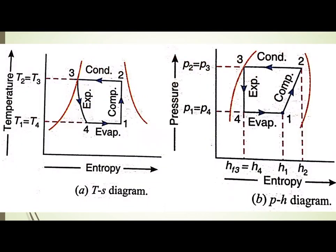Here is the PH diagram and TS diagram. You can see that the exit of the compressor is wet vapor — it means point 2 is in the wet vapor region. Point 3 is on the saturated liquid line. Points 4 and 1 are also in the wet region. In the TS diagram, the 1 to 2 process is isentropic and the condition of the refrigerant at point 2 is wet vapor.